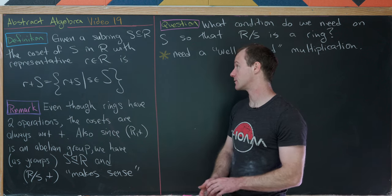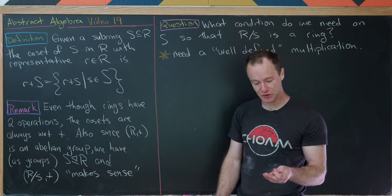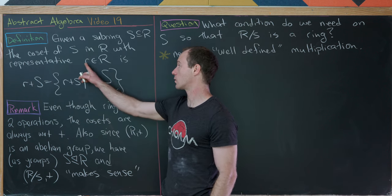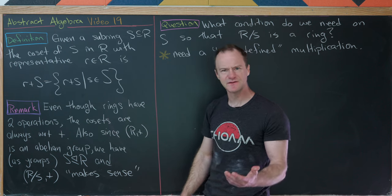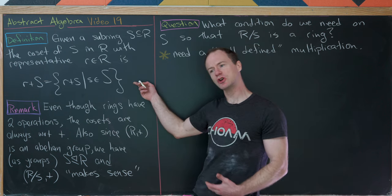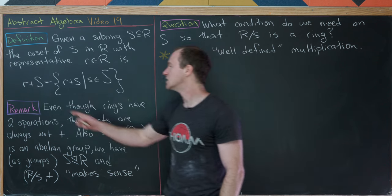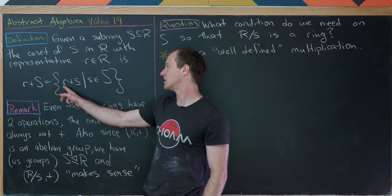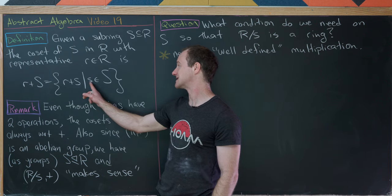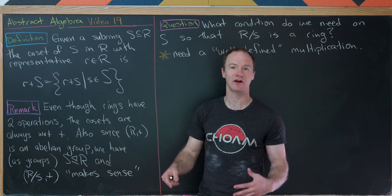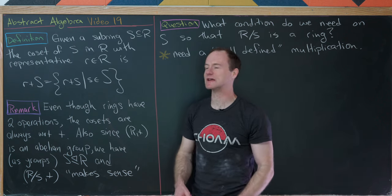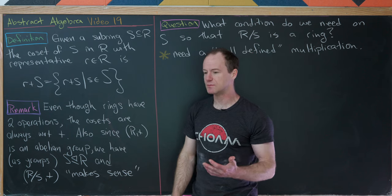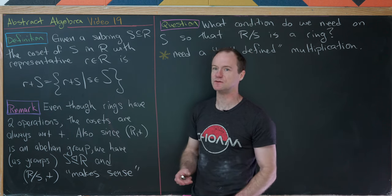Let's motivate that with the following definition. Given a subring S of a ring R, the coset of S in R with representative r is defined as r + S — the set of all elements of the form r + s as s ranges through the entire subring S. This should look familiar from when we dealt with cosets of groups.